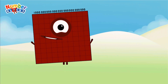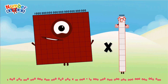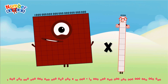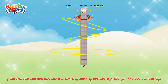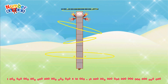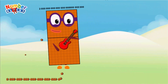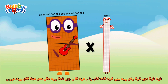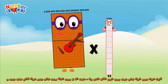1 octillion x 10,000 equals 10,000,000. 2 octillion x 10,000 equals.